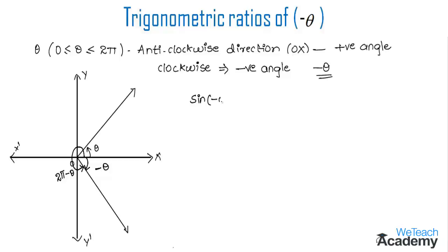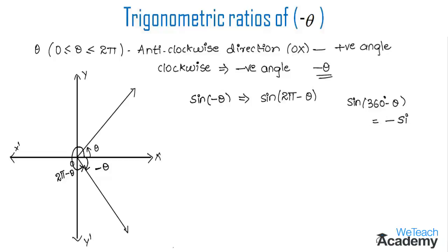Now let us discuss trigonometric ratios of negative angles. For sine of minus theta, we can write it as sine of (2π minus theta). We know that (360° minus theta) lies in the fourth quadrant, where sine is negative. Since 360 is an even multiple, sine remains sine. Therefore, sine(360° minus theta) equals minus sine theta, so sine(2π minus theta) equals minus sine theta.